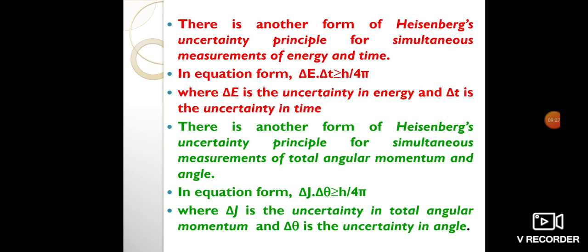To measure accurate position, we should use light with shorter wavelength but not momentum. To measure accurate momentum, we should use light with long wavelength but not position.